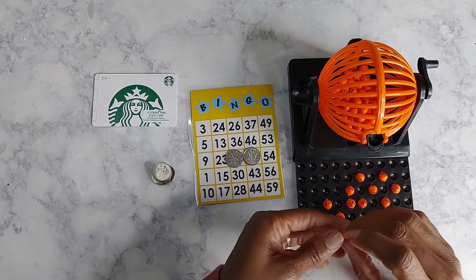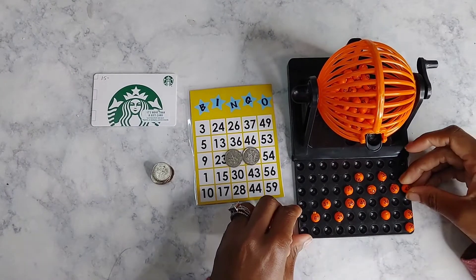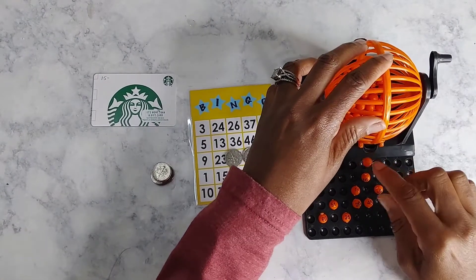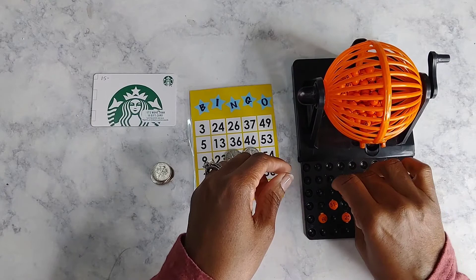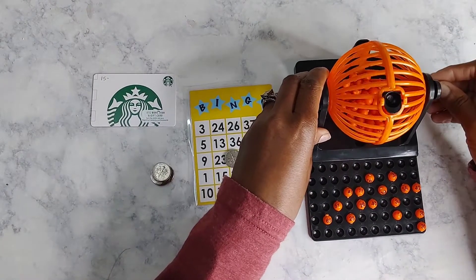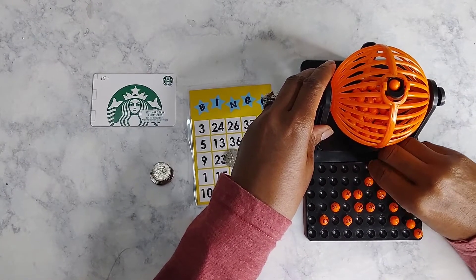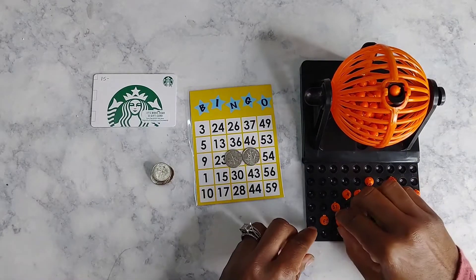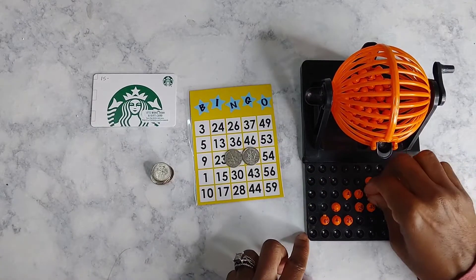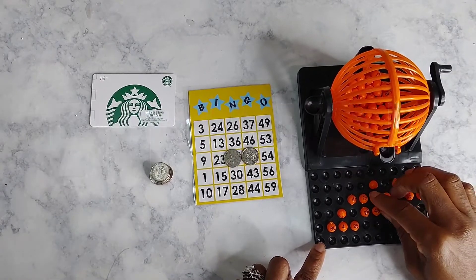Number forty-two. Nope. No forty-two. Number forty-one. Nope. This one is number four. Nope. Oh, this ain't bingo. Not bingo.